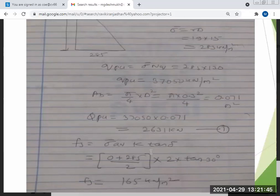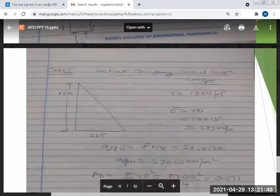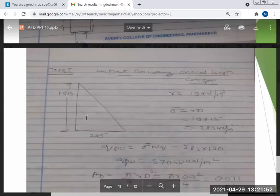Sigma average into K into tan delta. Sigma average means what? If you draw this pressure diagram, at top surcharge is zero, here it is 285, its average is zero plus 285 by 2. Whatever the surcharge is acting at the center is given by zero plus 285 by 2 into value of K is 2, value of K is 2, into tan 30. Delta is equal to 0.7.